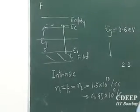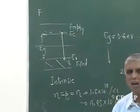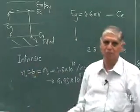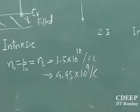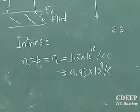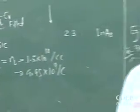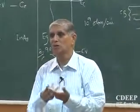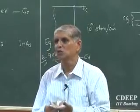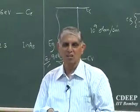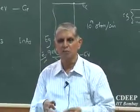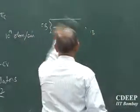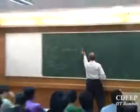Intrinsic semiconductors always have n equal to p. But all devices form junctions made of P-type and N-type material, requiring more holes in the P-region and more electrons in the N-region. In intrinsic material this is never the case, so we must do something to create these P and N regions.